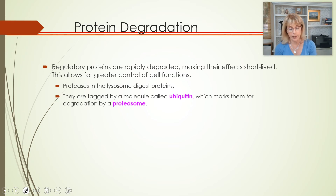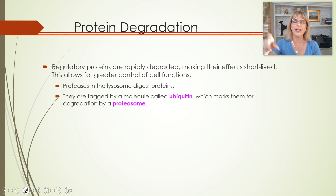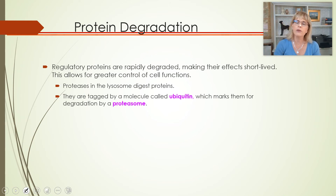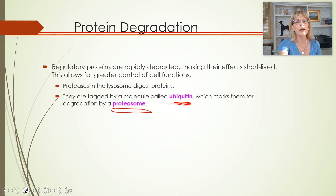Proteins don't get used up quickly — if they're enzymes or other things, they're not consumed rapidly. However, they're not eternal. Regulatory proteins get degraded quickly, but all proteins will eventually be degraded. When a protein starts to age, it gets tagged by a molecule called ubiquitin, which marks it to be sent to a proteasome.